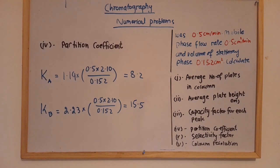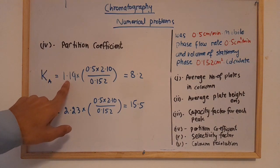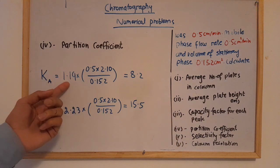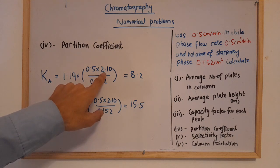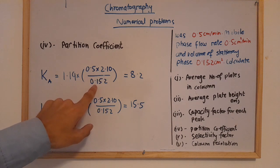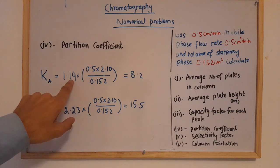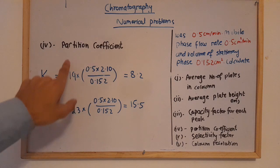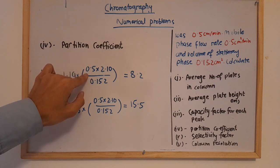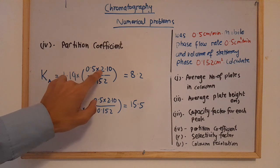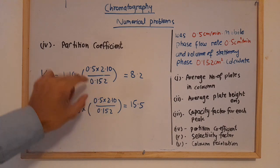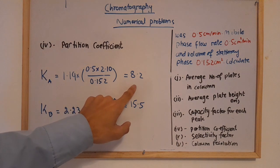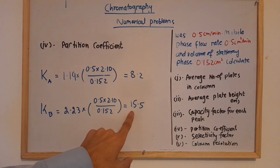To find the partition coefficient, multiply the capacity factor by the ratio of mobile phase volume to stationary phase volume. The mobile phase flow rate is 0.5, the unretained species elution time is 2.10 min, and the volume of the stationary phase is 0.152 mL. Multiplying these with the respective capacity factors gives: Ka = 8.2 for compound A and Kb = 15.5 for compound B.